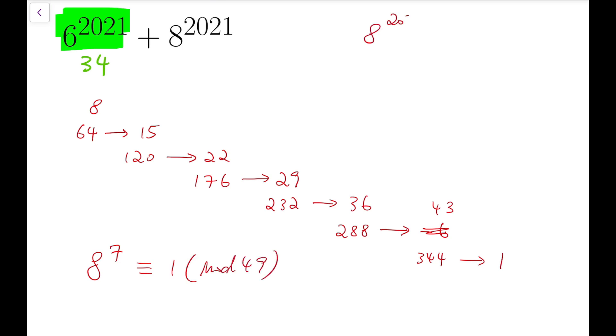Similarly, we can write 8 to the power of 2021 using the pattern, and we know it's actually congruent to 36 mod 49. So for this part, the remainder is 36.